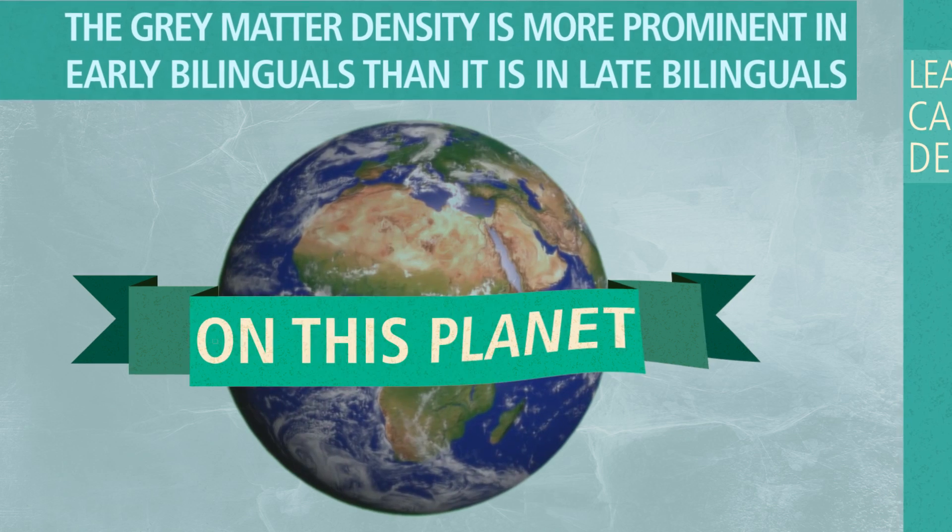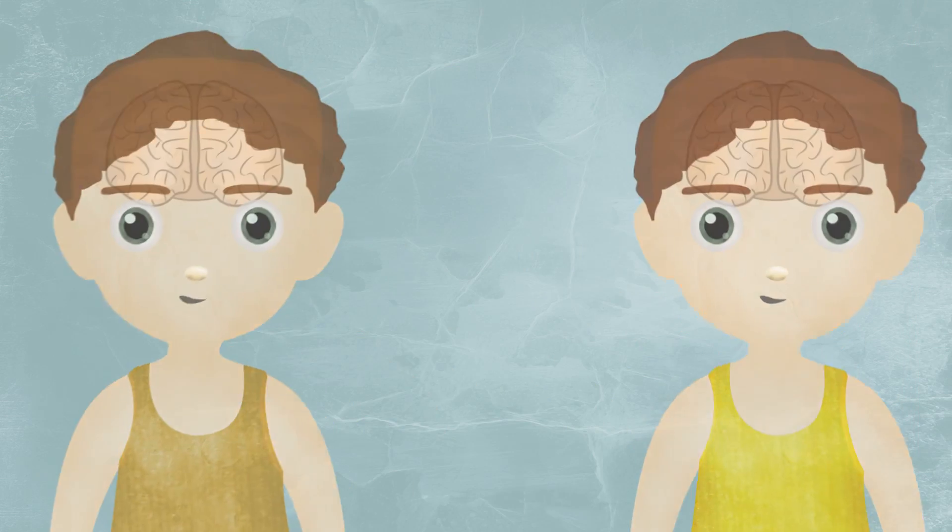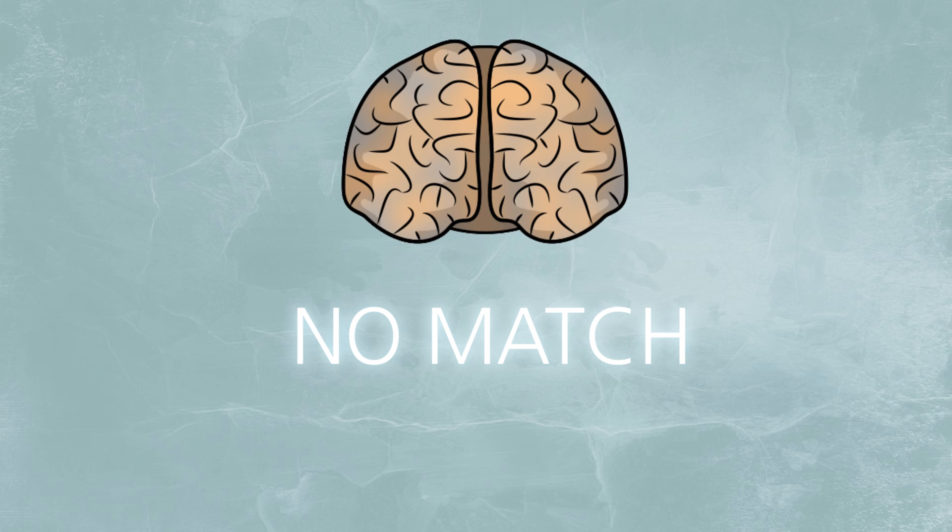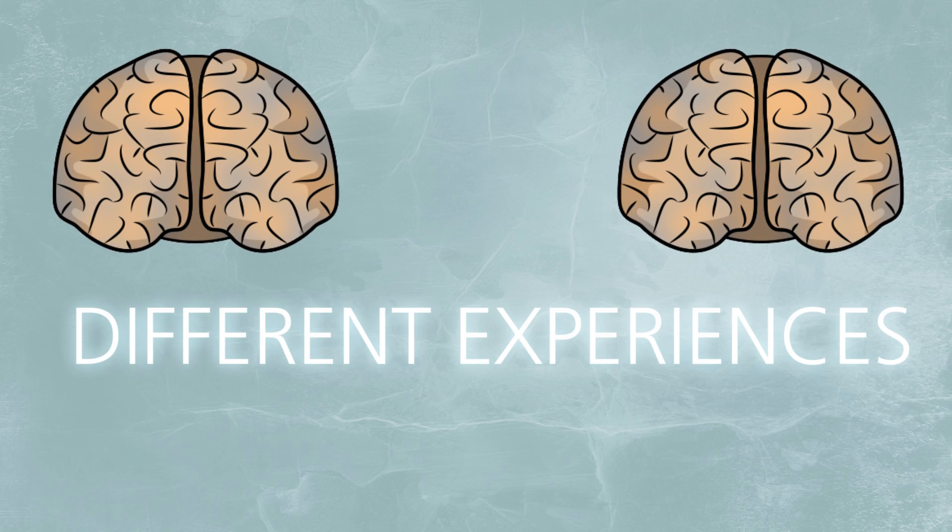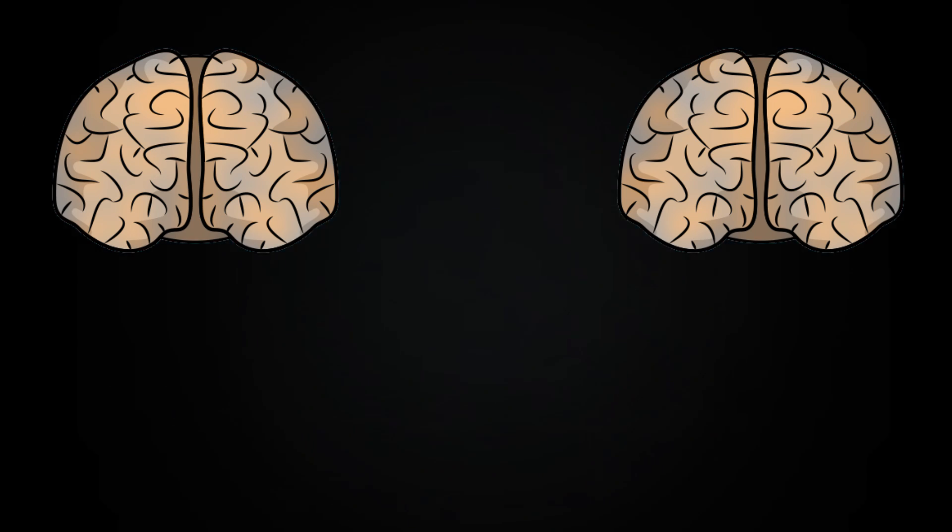So you can rest assured that nobody on the planet has a brain quite like yours. And even if you were cloned, it would be impossible for that clone to have the same exact understanding as you, due to its experiences being different than yours. So it's safe to say that each brain is unique in its own way.